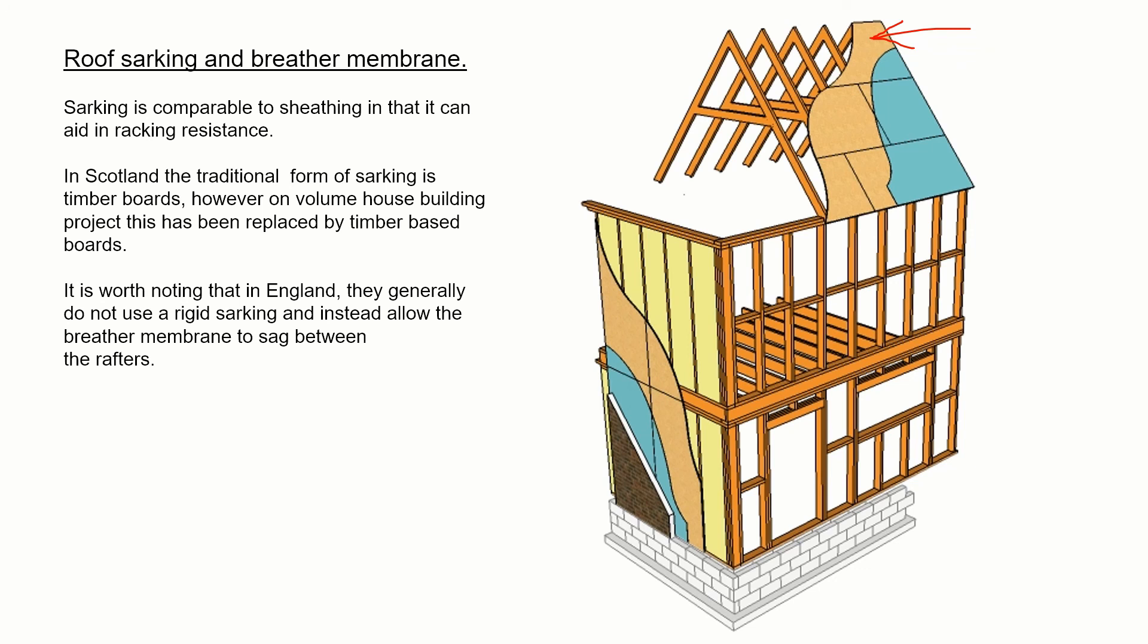And then over the top, we've got our breather membrane. So it's very similar construction to the side of the wall where we have sheathing and breather membrane before we have our covering. We would do the same on the roof. The little note there saying in England, they tend not to use this rigid board, but what they would tend to do is allow the breather membrane to sag between the rafters. So there's nothing rigid there. So they would need a lot more bracing.